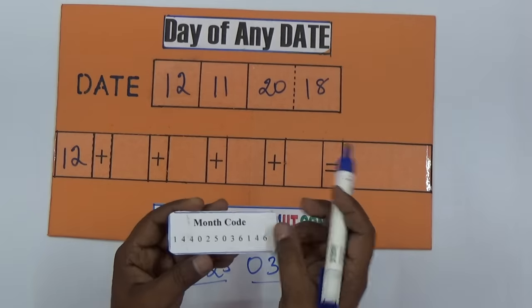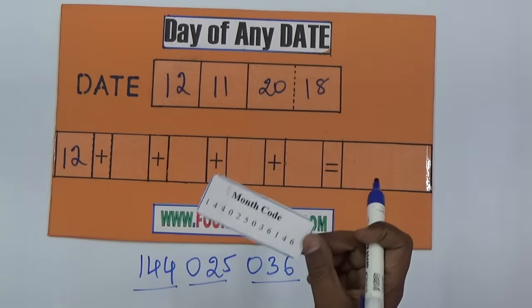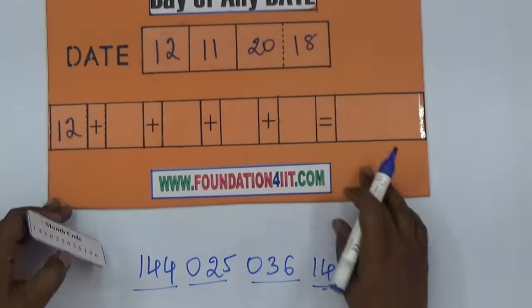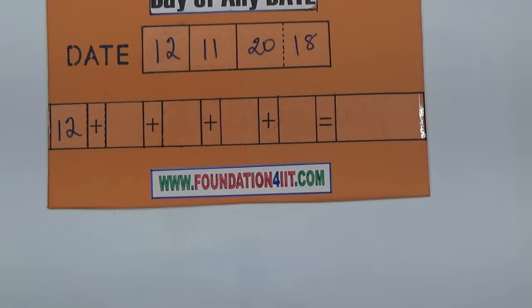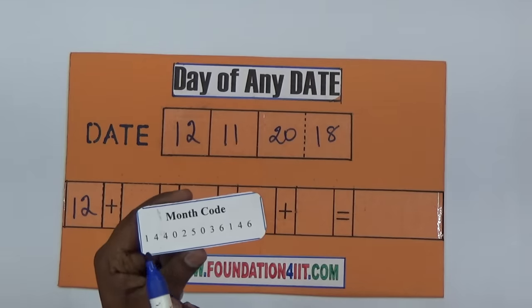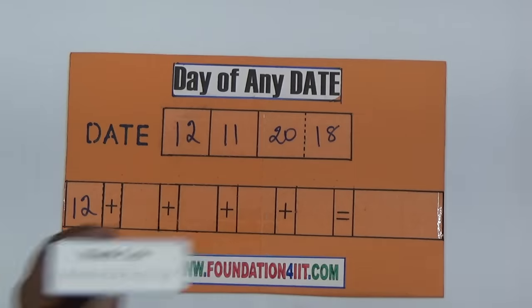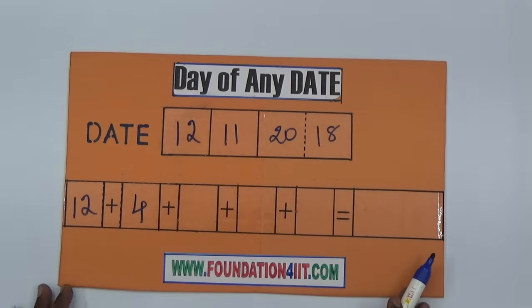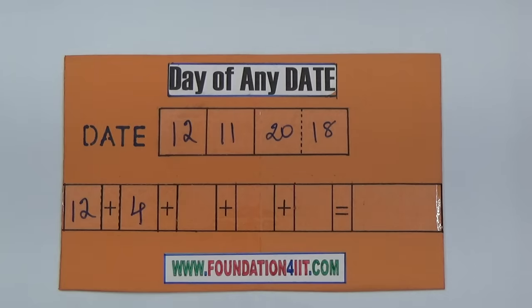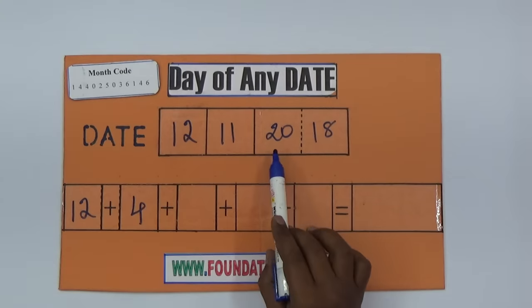If it is January, keep one. If February, four. March is four. This is the month code - a small card code you need to remember. According to this number, January, February, March, April, May, June, July, August, September, October, November. So November number is four. First 12 as it is, and in the place of month, write the month code.